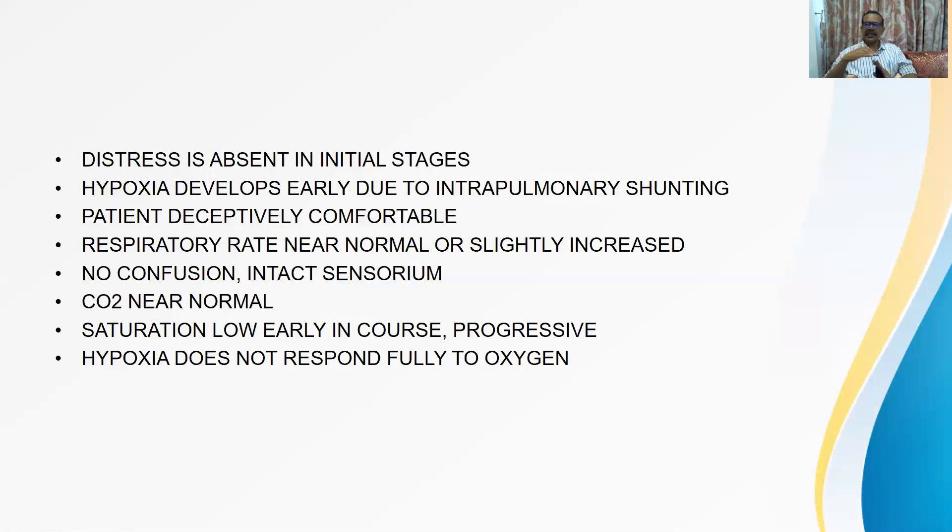Because here, the basic reason is lack of hypoxic pulmonary vasoconstriction and intrapulmonary shunt. It is behaving like, in other words, congenital cyanotic heart disease. Even if you give oxygen, it rises little bit but doesn't become normal. So comfortable patient, no distress, no tachypnea, hypoxia early, responding poorly to administered oxygen. This is the hallmark of this P-type.